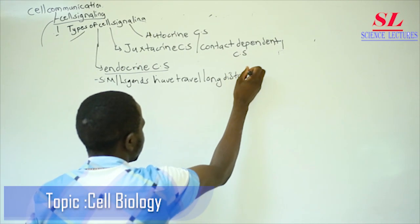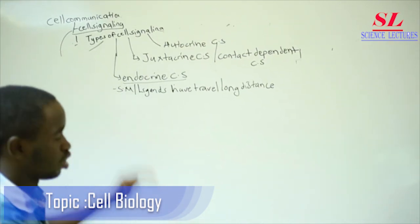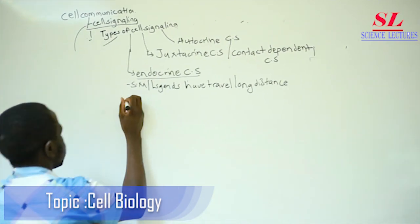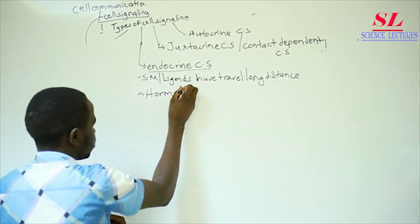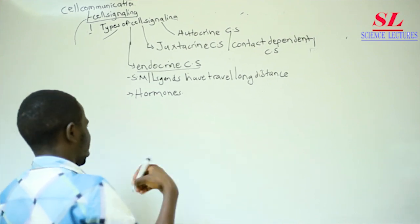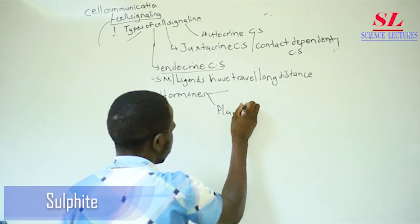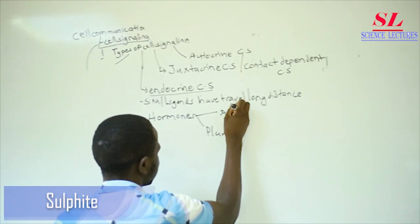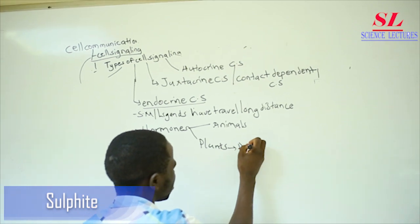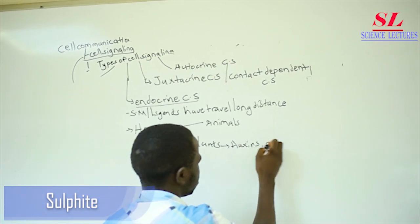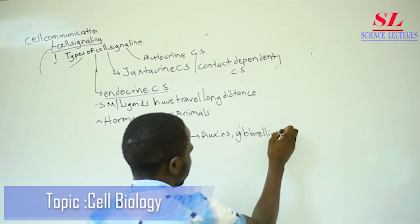Whenever signaling molecules travel for long distances, that ceases to be paracrine cell signalling and it becomes endocrine cell signalling. This usually involves hormones, which are either produced within plants or animals. Examples of plant hormones include auxins, gibberellins, and ethylene.